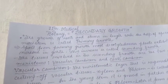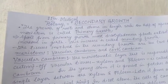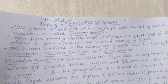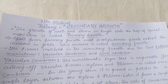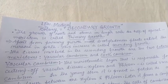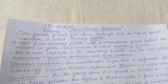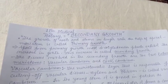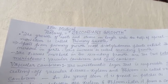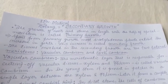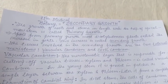Apart from primary growth, most dicotyledonous plants also exhibit an increase in girth. This increase is called secondary growth. The tissues involved in the secondary growth are two lateral meristems: vascular cambium and cork cambium.